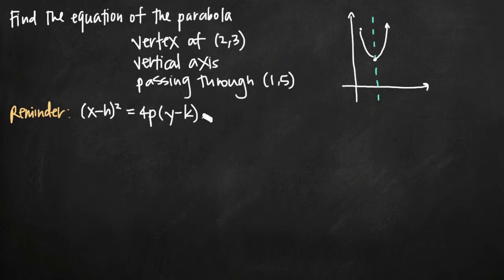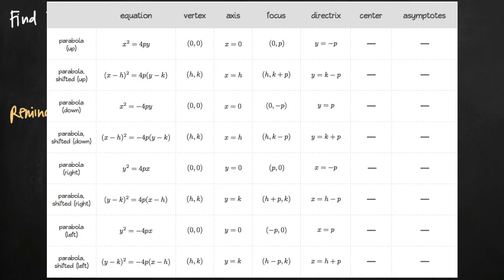And I've written the formula for the equation of a parabola that shifted and opens up. It's this one right here. If you have trouble remembering these formulas, you can use the chart that I have on my website to help yourself memorize them. But you'll notice here that we have on this chart a column for axis. We know that our axis is a vertical axis, which means it has to be in the form x equals something. The equation of the axis will be the line x equals, in our case, 2.